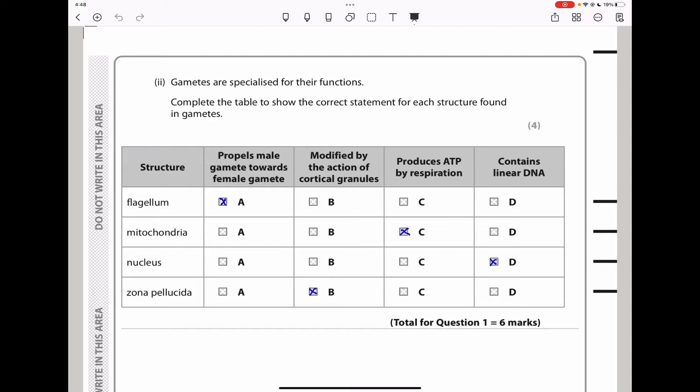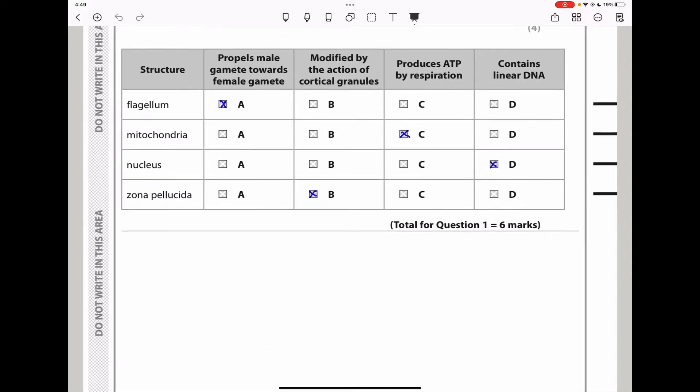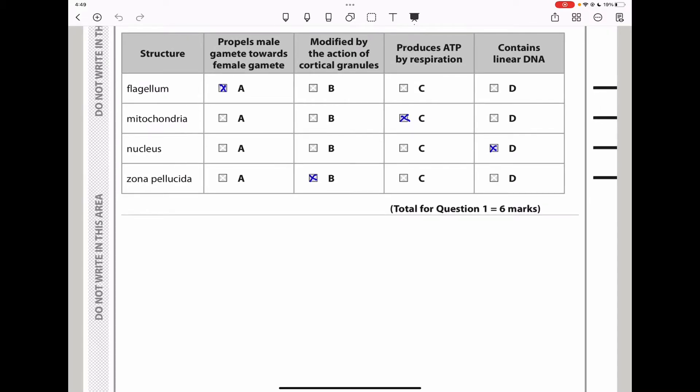Complete the table to show the correct statement for each structure in gametes. Gametes are sex cells, including the sperm and the egg. Which structure propels male gametes towards female gametes? That is the flagellum, so the answer is A. Which structure is modified by the action of cortical granules? That is the zona pellucida, so the answer is B. Which structure produces ATP by respiration? That should be the mitochondria, so the answer is C. Which structure contains linear DNA? That should be the nucleus.